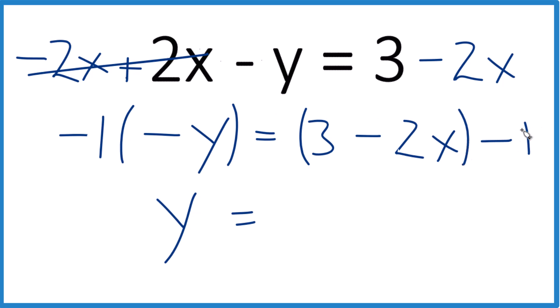So I'm going to put parentheses around there. 3 times negative 1 is negative 3. And negative 2x multiplied by negative 1 is positive 2x. We change that sign when we multiply two negatives.